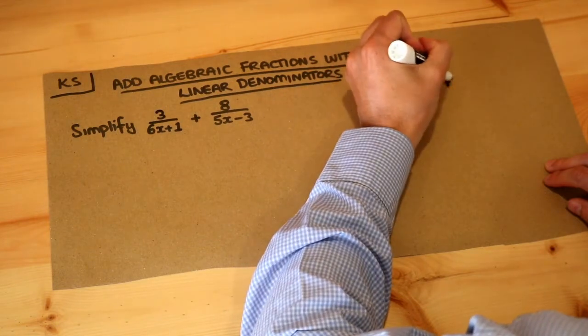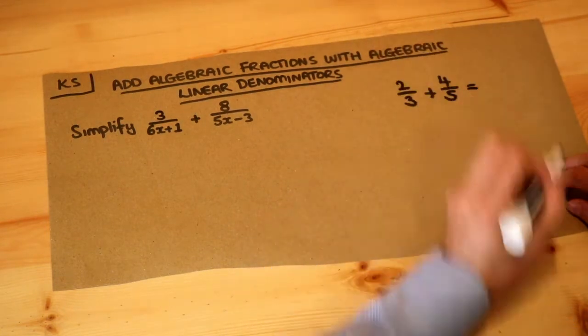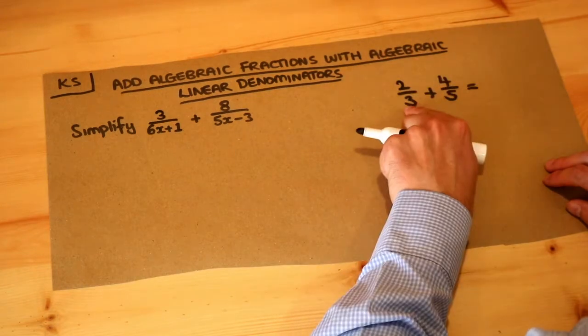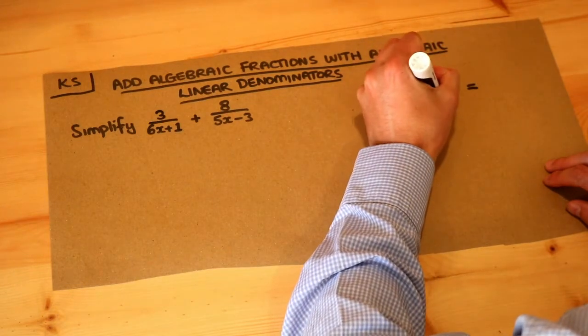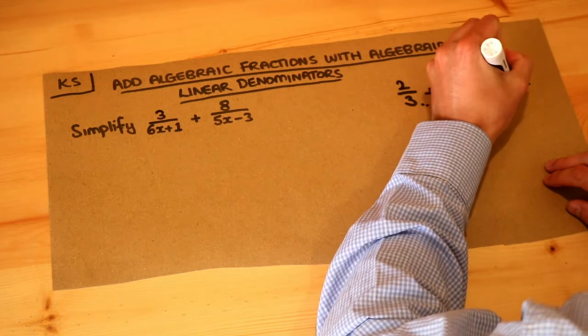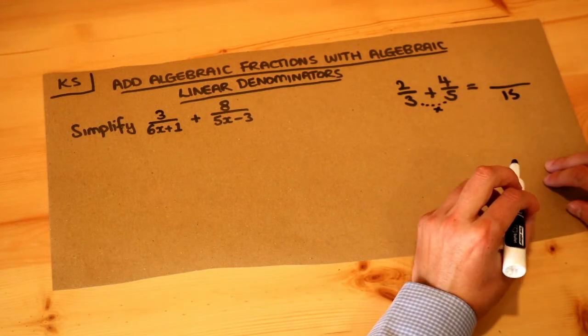If we added two normal fractions, then the quick way we can do it is to multiply the two denominators. So we multiply the 3 and the 5 to get 15, and then we do something called cross multiply.